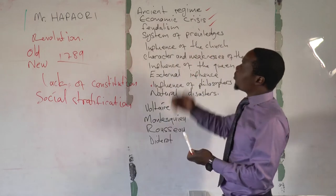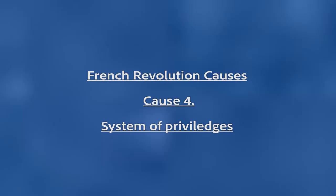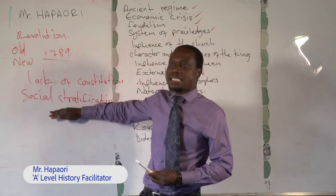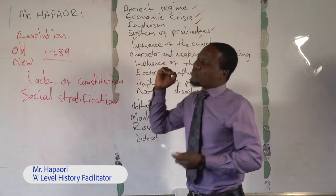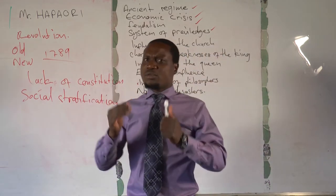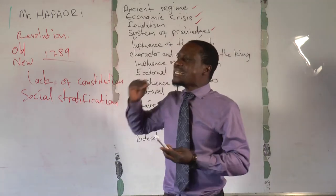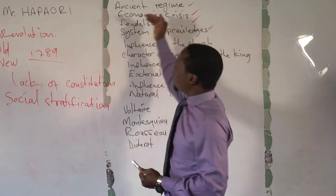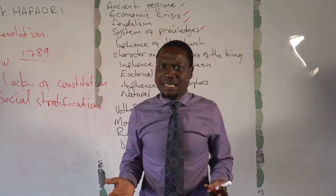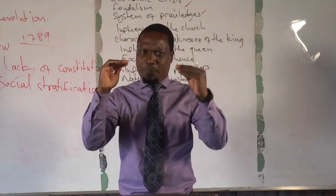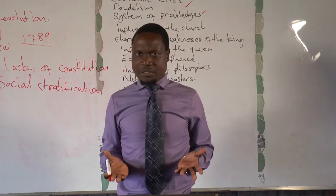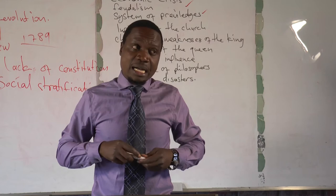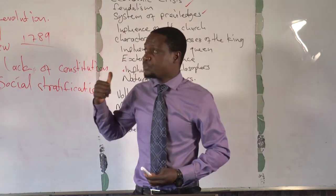Continuing with the causes of the French Revolution: the next cause was the system of privileges. The French society was divided into social classes, and the top classes — the first and second estates — had many privileges, whereas the third estate had none. Some of those privileges included access to land, exemption from payment of taxes, and reservation of top positions in the church and government. Appointment to positions was not open to ability but rather based on birthright.